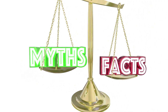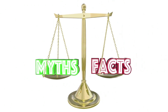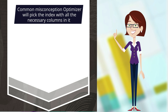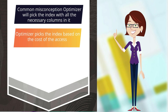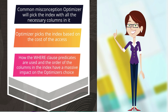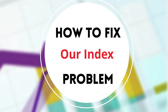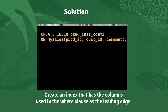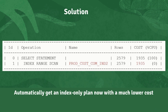Before I give you the solution to this problem, let's take a look at some common myths surrounding the selection of indexes by the optimizer. The most common misconception is that the optimizer will pick the index that contains all the necessary columns to answer a query. When in fact, the optimizer picks the index based on the cost of accessing those indexes. How where clause predicates are used and the order of the columns in the index has a massive impact on the optimizer's choice, much more so than whether all of the columns are actually present in the index. The solution is straightforward: we simply need to create an additional index on my sales that contains the product ID and customer ID first as the leading edge, and then the columns needed from the select list — in this case, the comment column. By creating such an index, the optimizer will automatically pick an index range scan only plan, and that plan has a much lower cost.